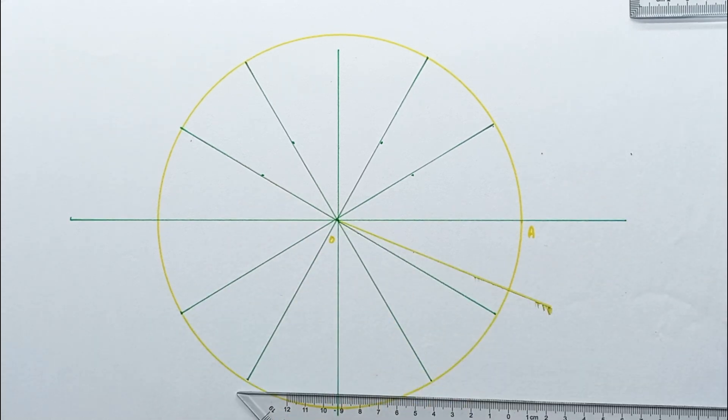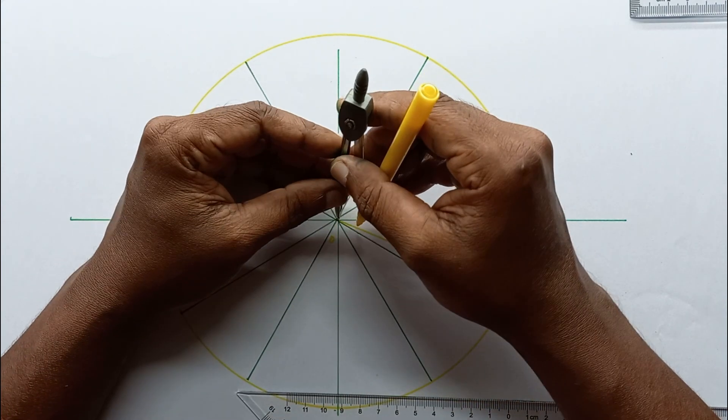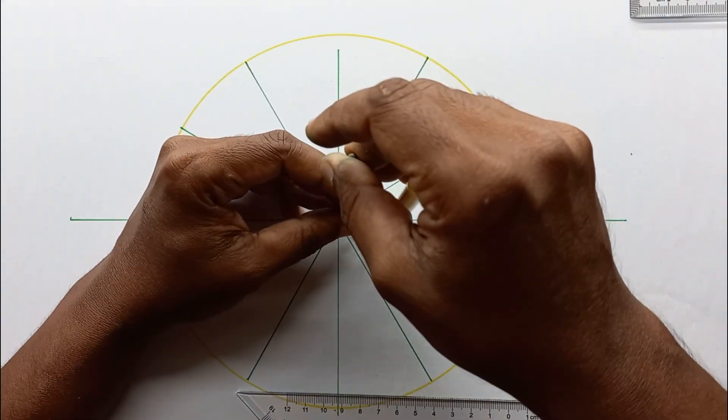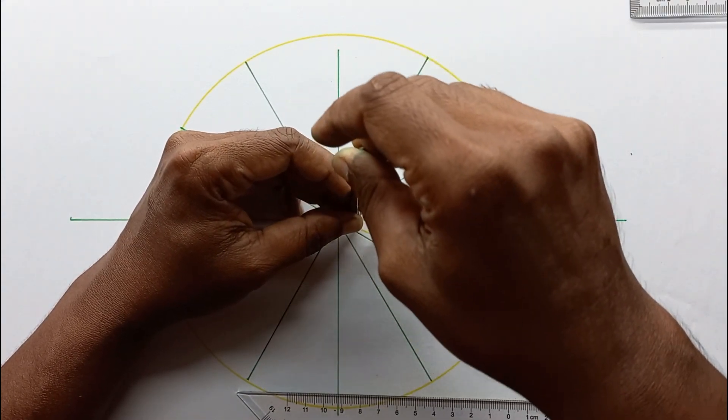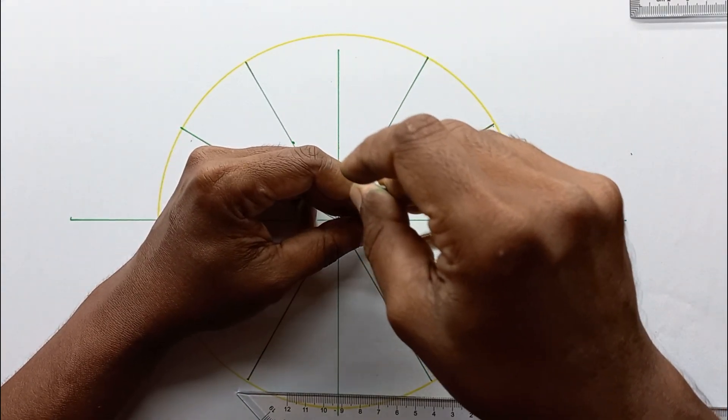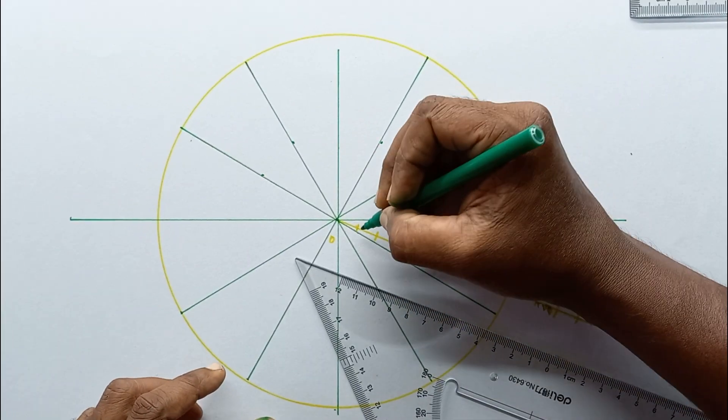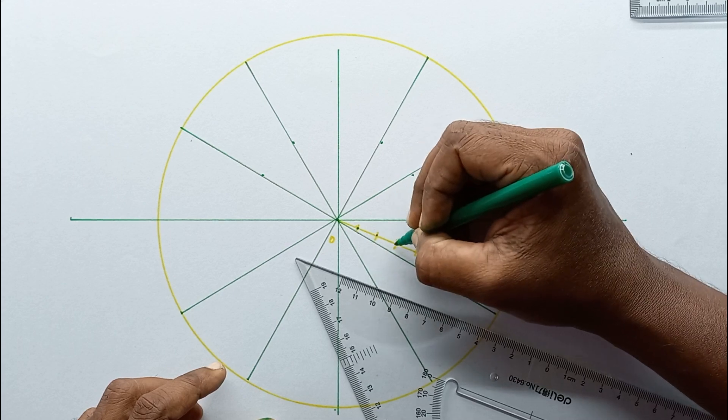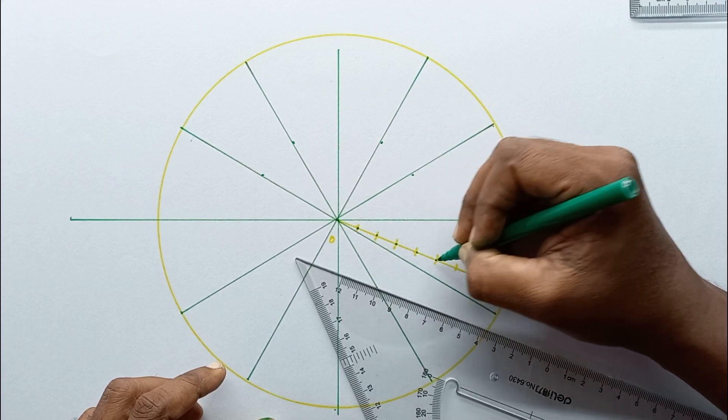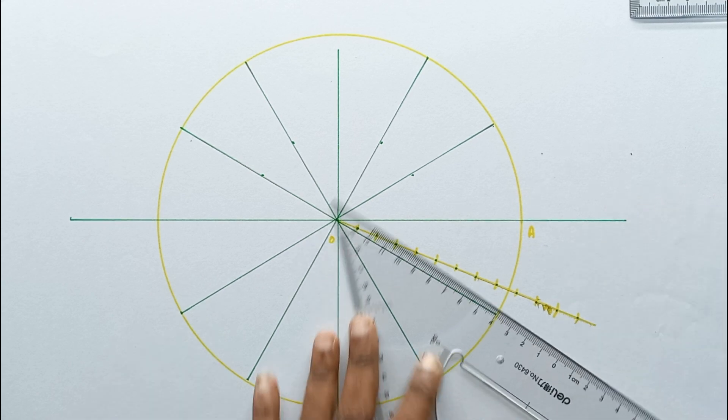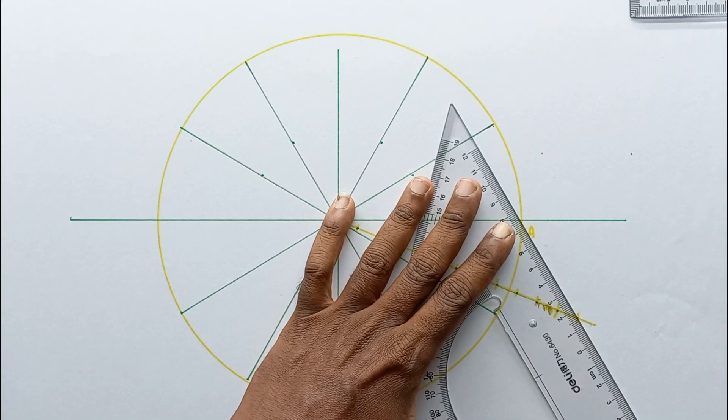Then I'm going to mark 12 equal segments. You can use a compass to mark these segments: one, two, three, four. Let's mark these points, then let's join these two end points.